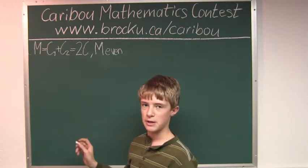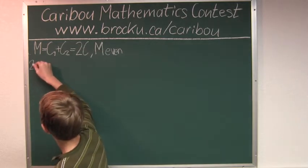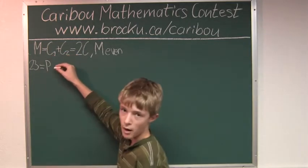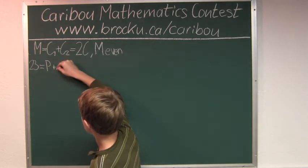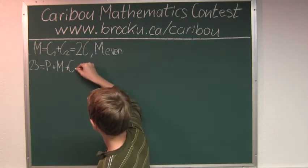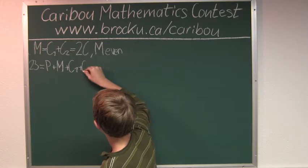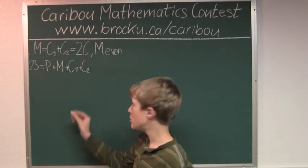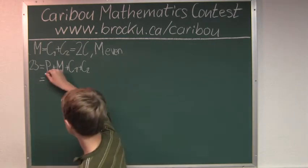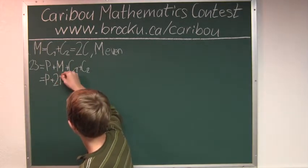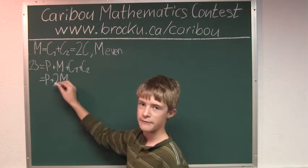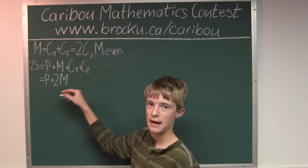So, out of the 23 beans eaten: Paw ate, Ma ate, child 1 ate, and child 2 ate. That would also be equal to P plus 2M, because we have one M from the children's total, but then we also have the other M, because both of the children together eat the same as one M.